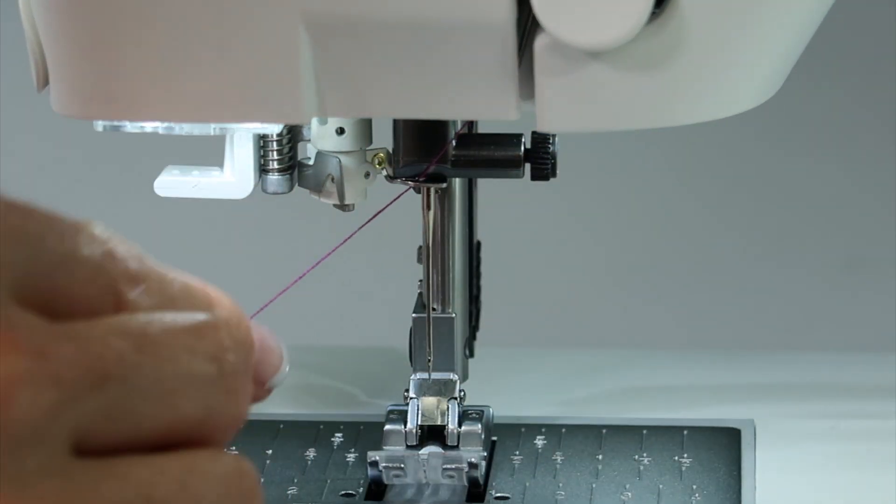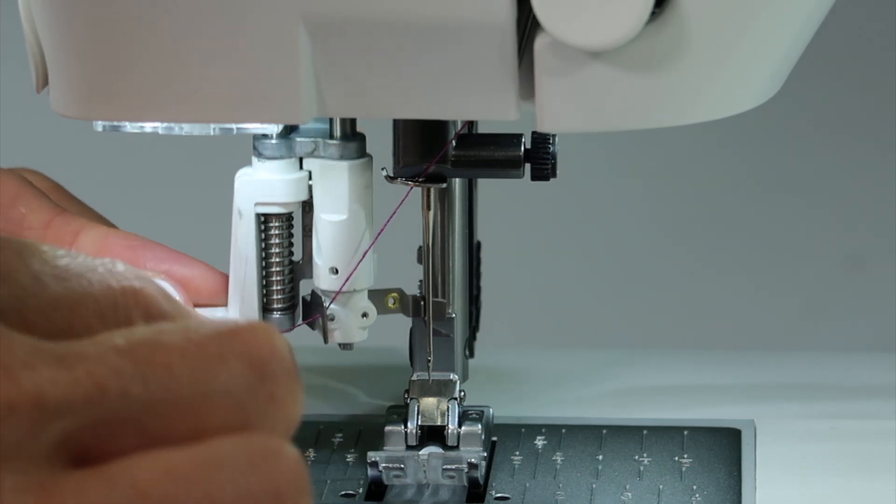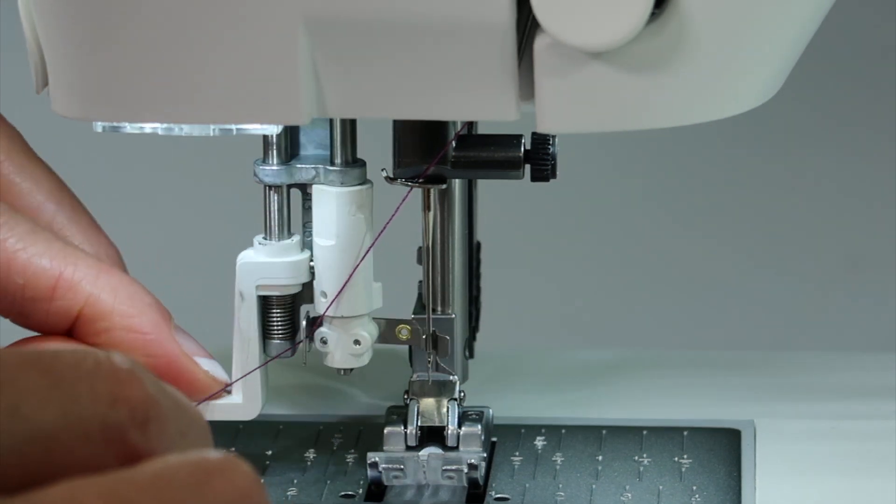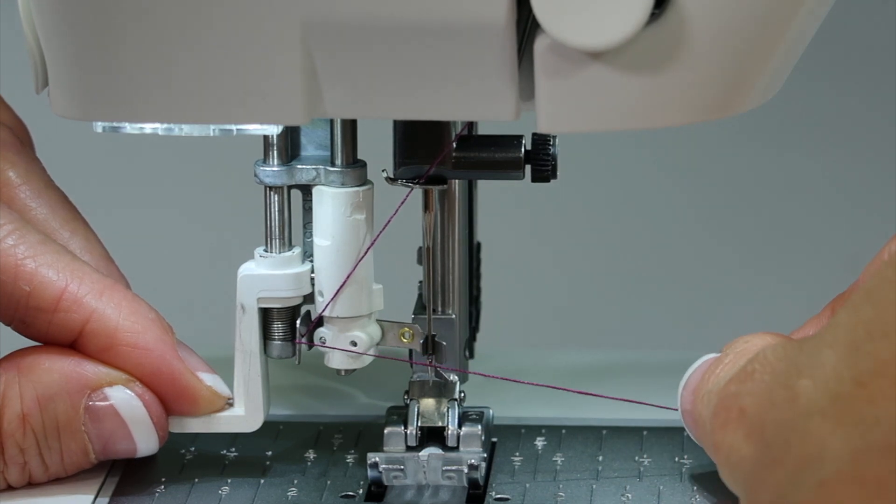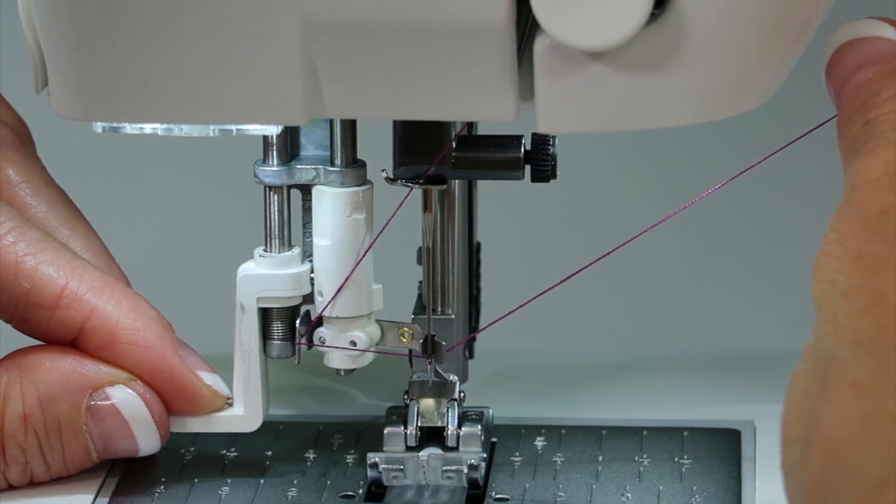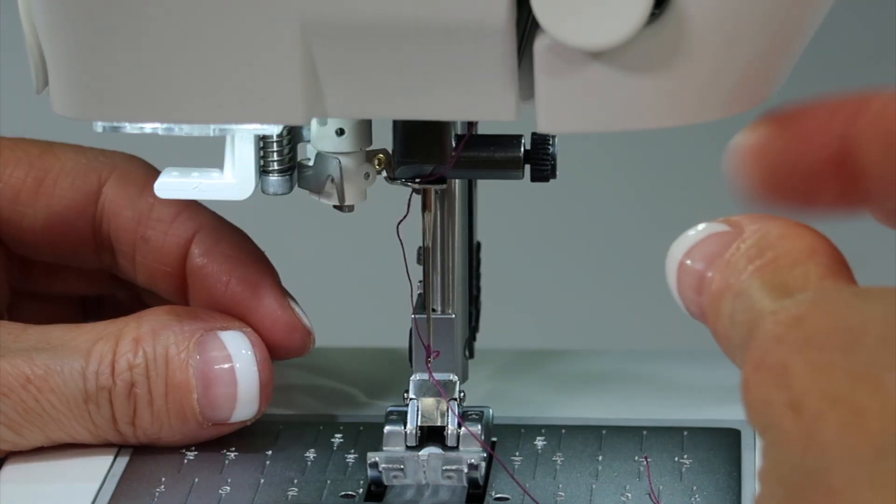Let's see that one more time. Bring it down a little bit, hook it underneath here, bring the needle threader all the way down, gently too, and take the thread in the little hook, lift up, and then let it pull it out of your hand.